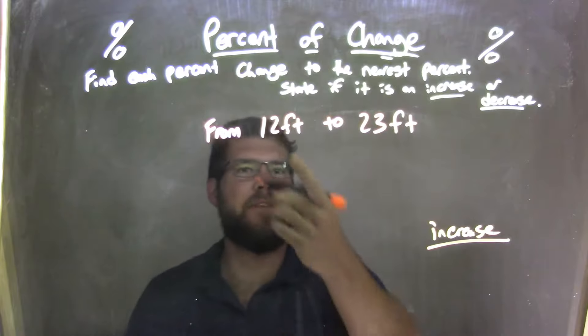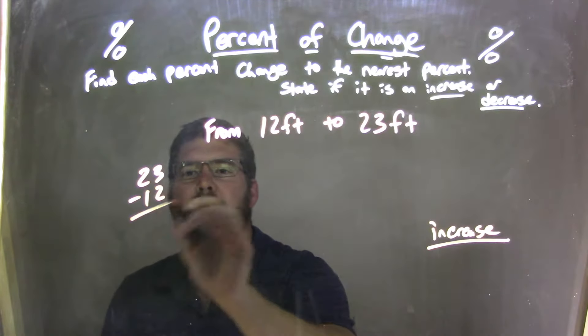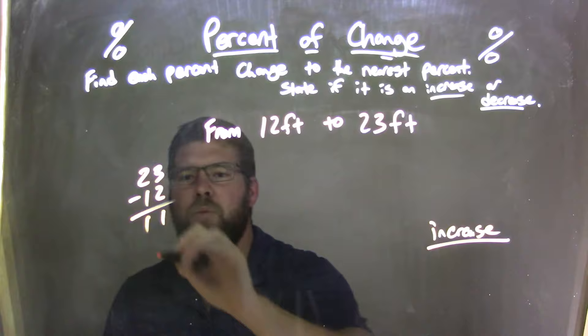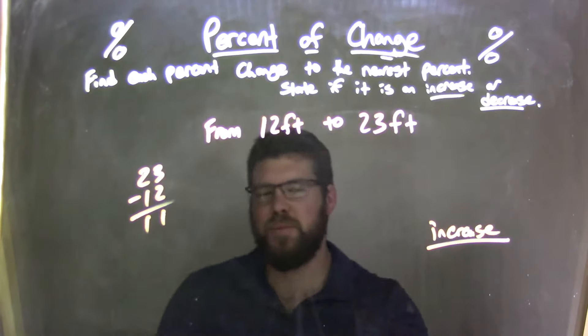Now I need to find the difference between these two numbers. 23 minus 12: 3 minus 2 is 1, 2 minus 1 is 1. We have an 11 foot difference between these two numbers.